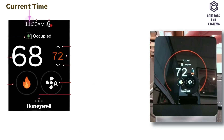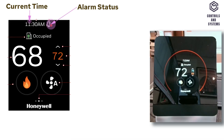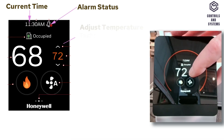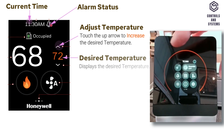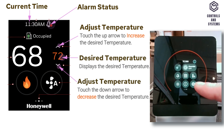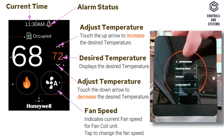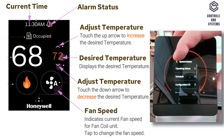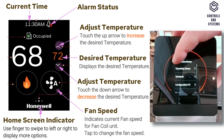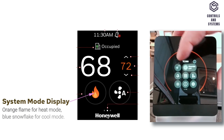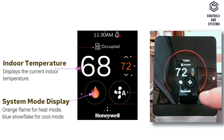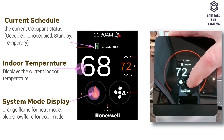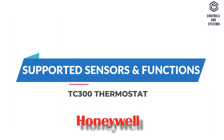Home Screen Icons. The icons displayed are: current time, current alarm status, adjust temperature increase, desired temperature, adjust temperature decrease, fan speed control, home screen indicator, system mode display, indoor temperature, and current schedule.